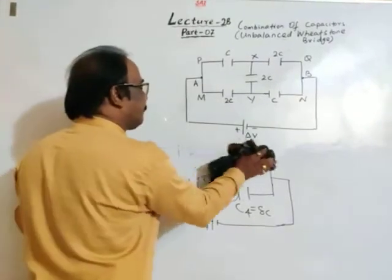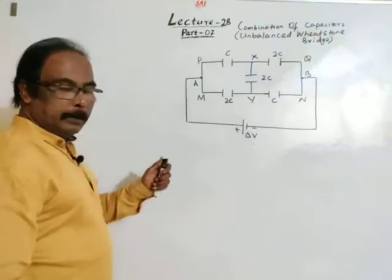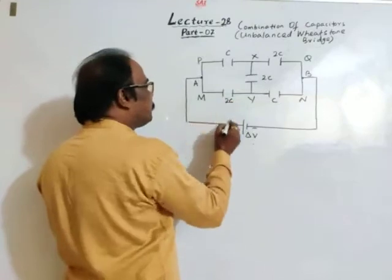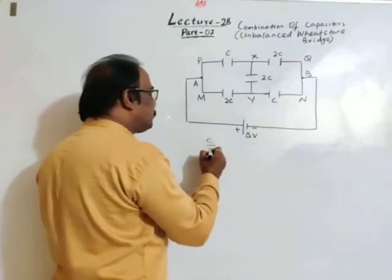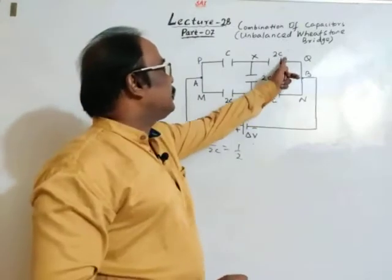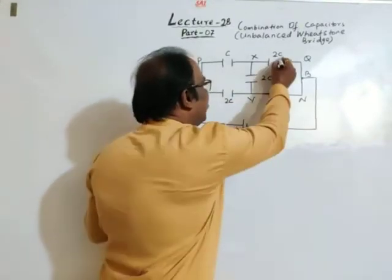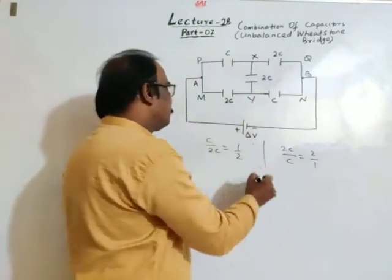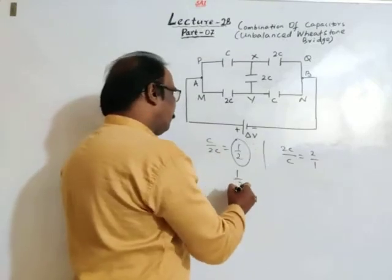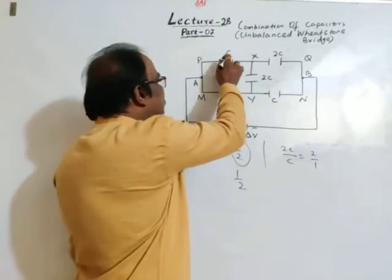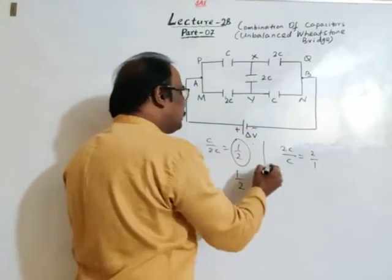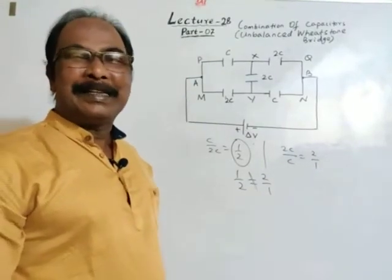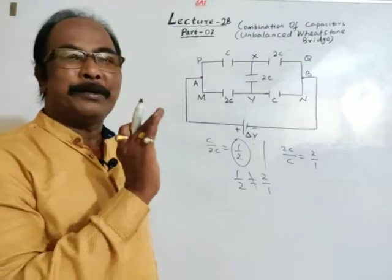Here, C1=C, C2=2C, C3=2C, C4=C. The ratio of C1 to C2 is 1:2, but the ratio of C3 to C4 is 2:1, which is not the same. So the balance condition is not satisfied, and this is an unbalanced Wheatstone's bridge.